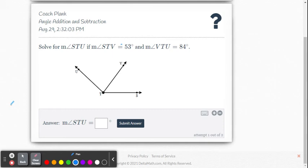Let's do one more example. Solve for the measure of angle STU, so they want us to find the large angle this time. They give us the measure of angle STV, that's this angle here, it's 53 degrees. And they give us the measure of VTU is 84 degrees, that's this angle here.